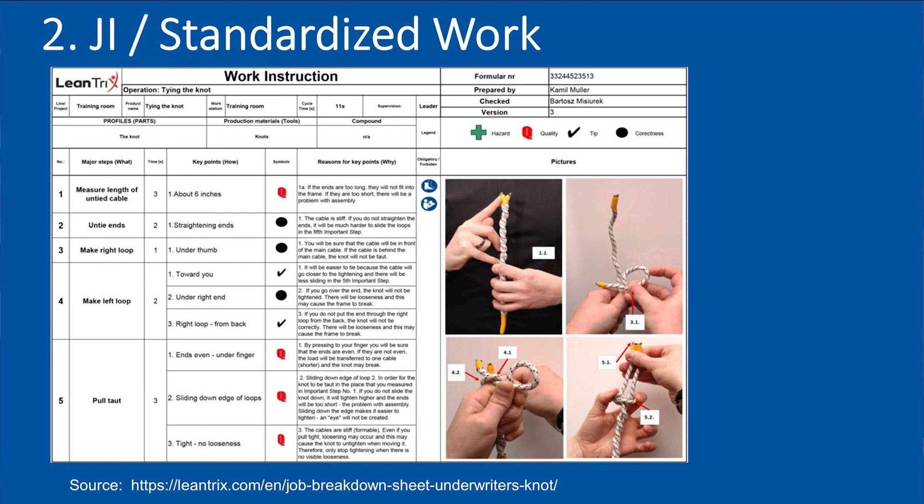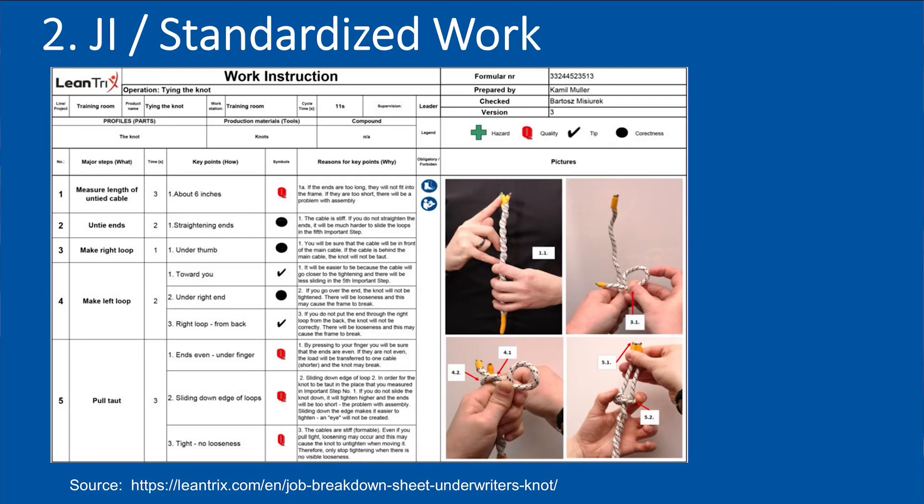Another example is Toyota standardized work and job instruction. I used this previously as a general example — this is a JI template technically, but standardized work follows the same thinking. Employees are going to struggle with some aspect of the job. There might be 20 steps in standardized work, but you're not going to struggle with all 20. At some stage, two or three are going to give you the most difficulty. Good coaches can hone in specifically on those two or three steps that are giving you the most trouble, help you get better at them, so you're able to do the overall task. It's really about identifying the right key points and the right sections you're struggling with.